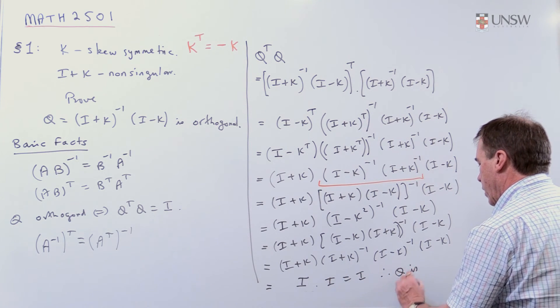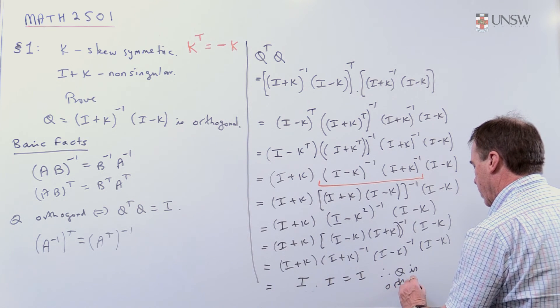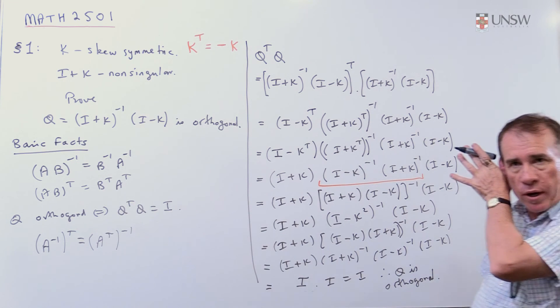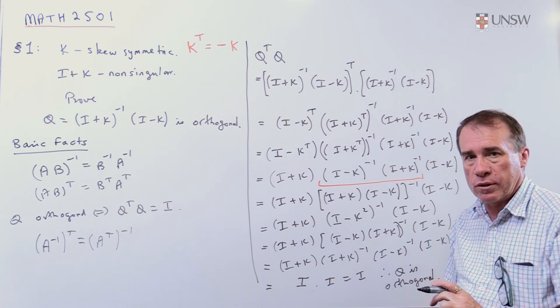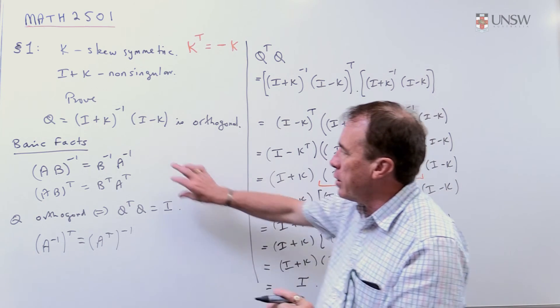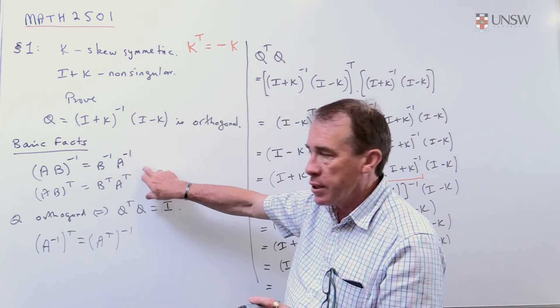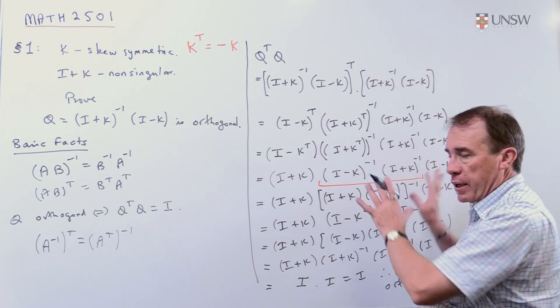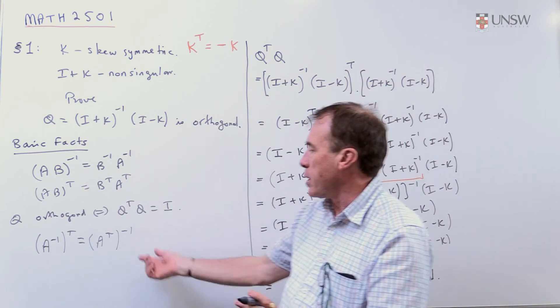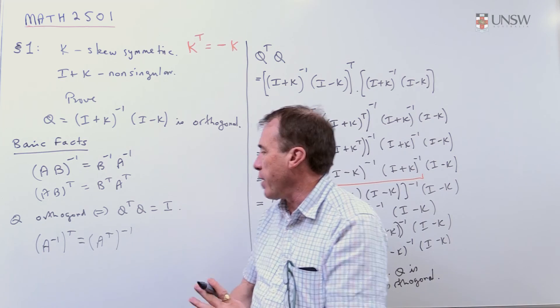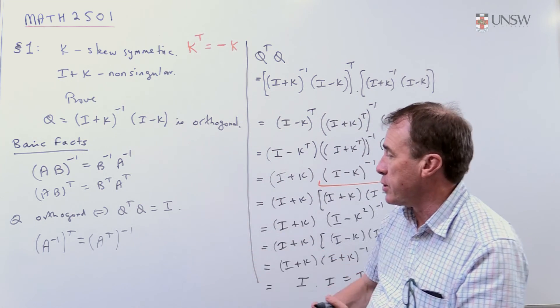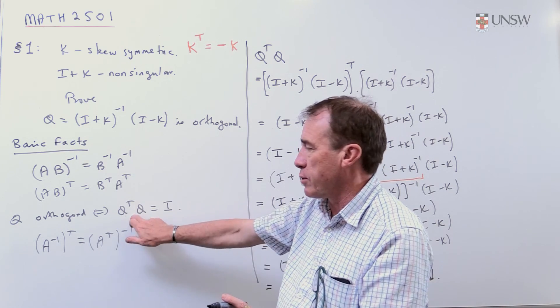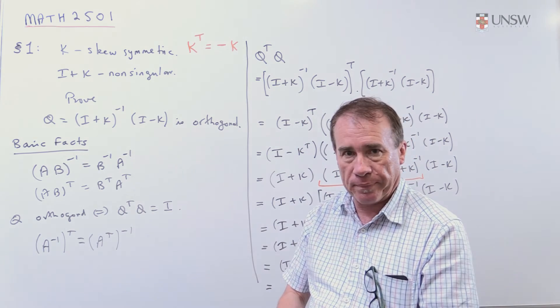And therefore, Q is orthogonal. Now, that's a nice exercise for you to go back and try and see if you can do it yourself. It's a good way of reminding yourself about these basic facts about inverses and transposes. Also, to be careful about cancellation, and also, using some of these other basic facts of inverses and transposes, you can flip them around, and also reminding yourself what all the problem is.